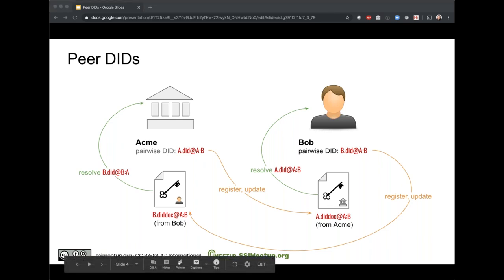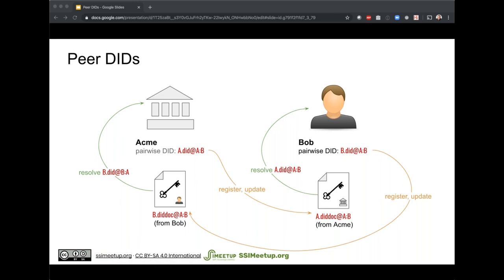Another question: how does Bob validate he's communicating with the actual ACME? There are several mechanisms Bob can use in combination. ACME could already have some kind of account that Bob logs into — they could use Bob's already-authenticated session on their website to share the DID. There are also ways ACME could present a verifiable credential to prove who it is. It's a good question and there are multiple methods.